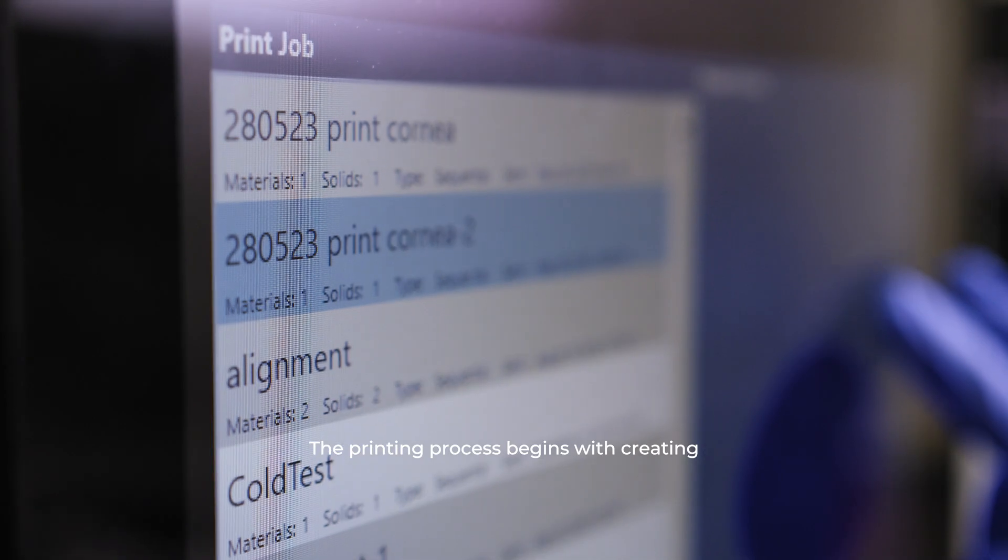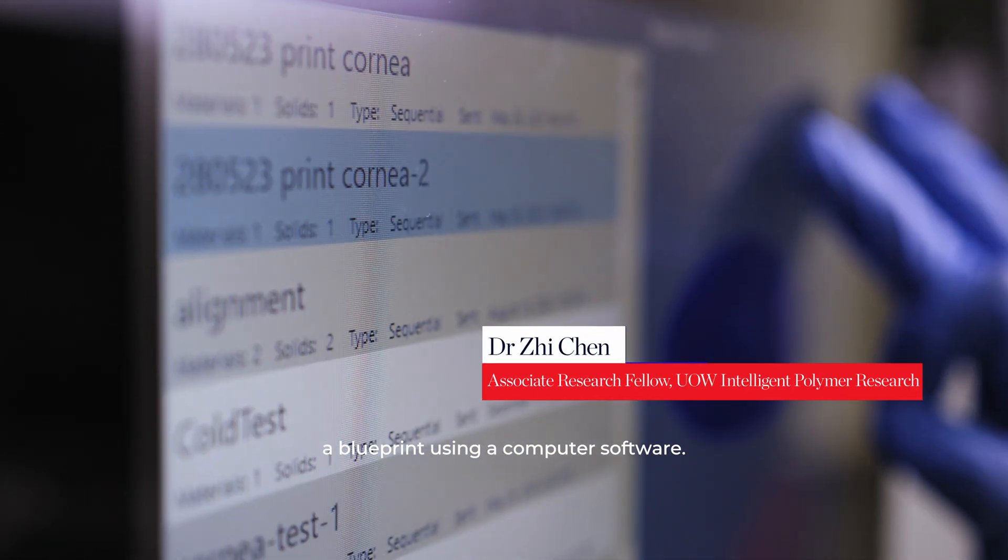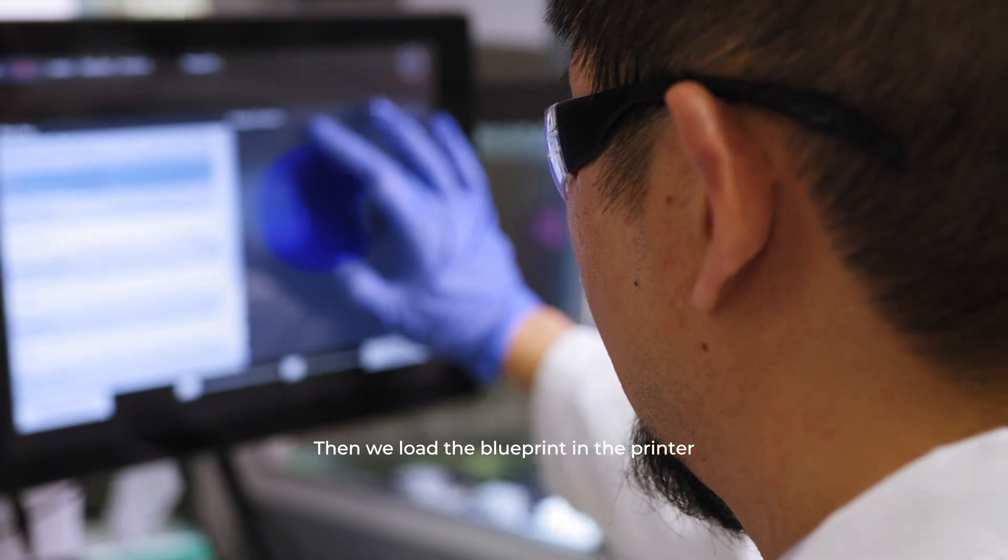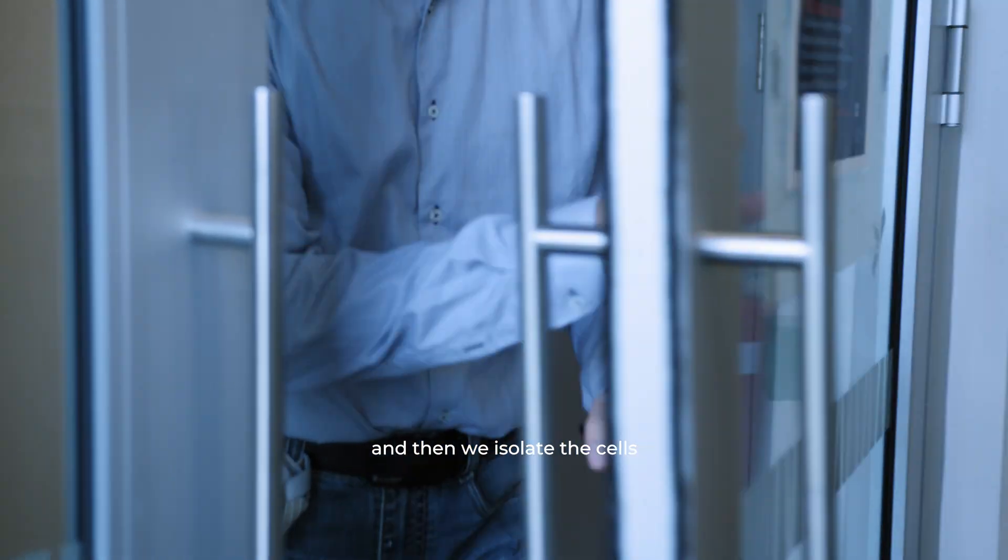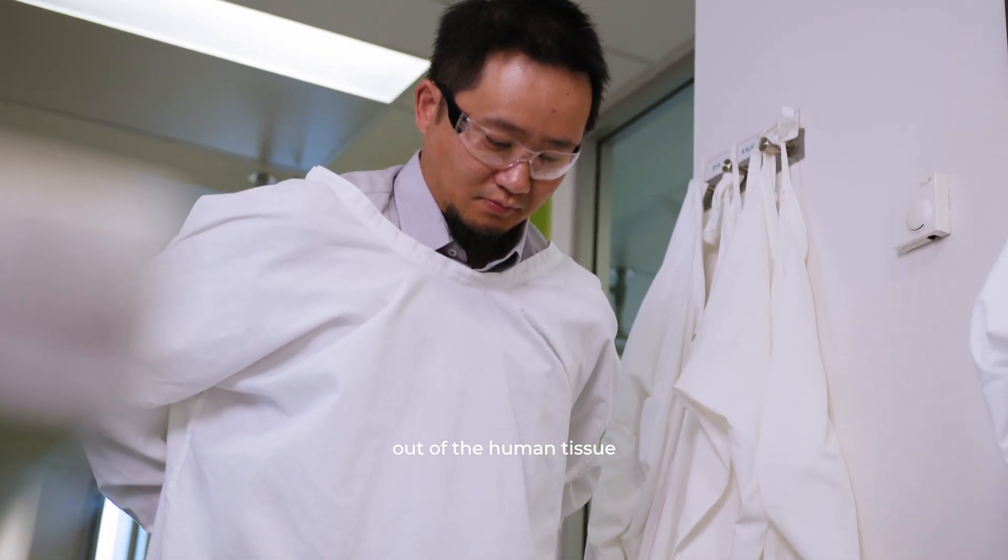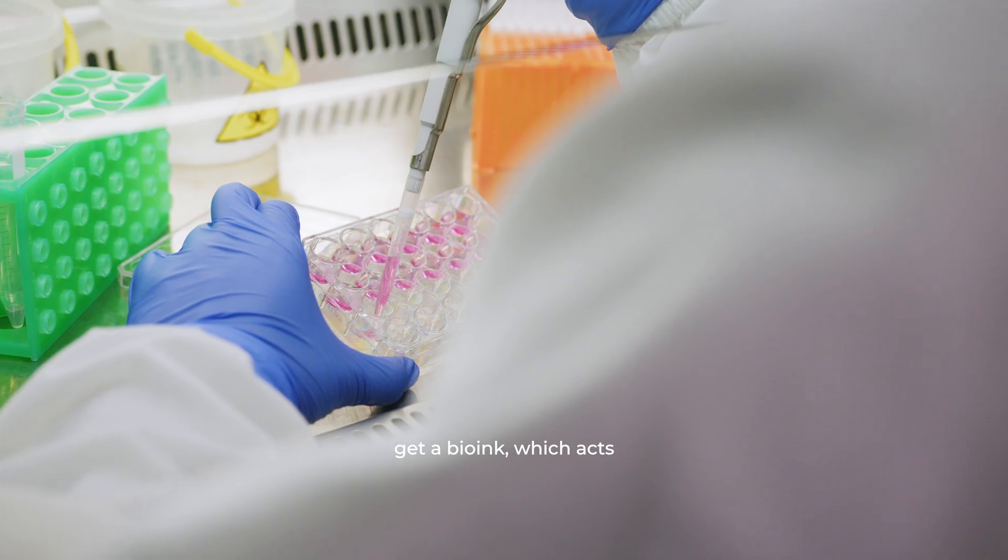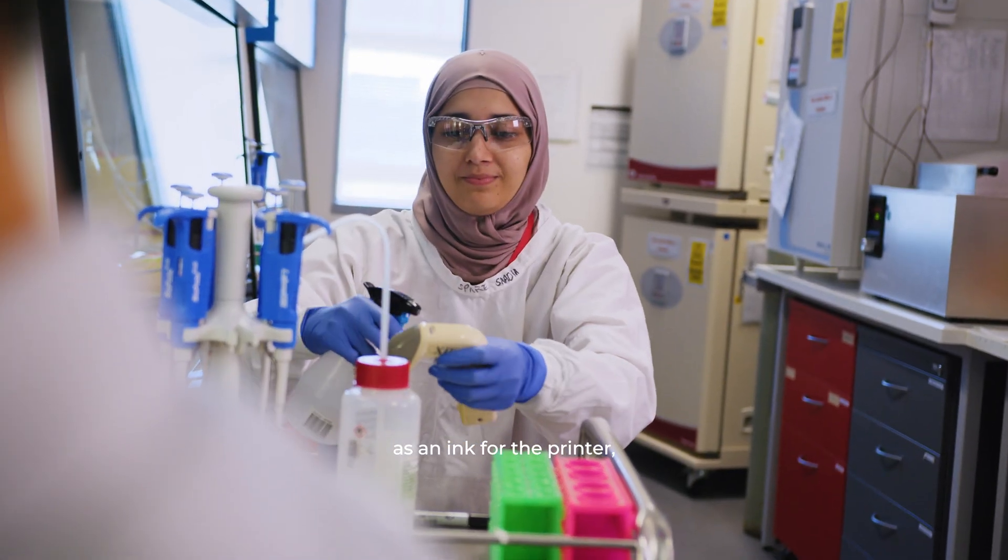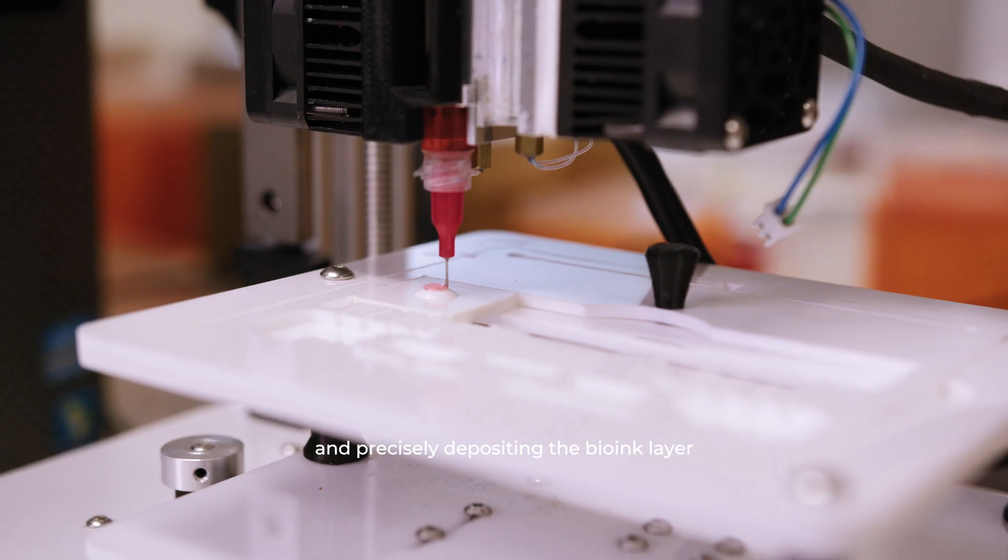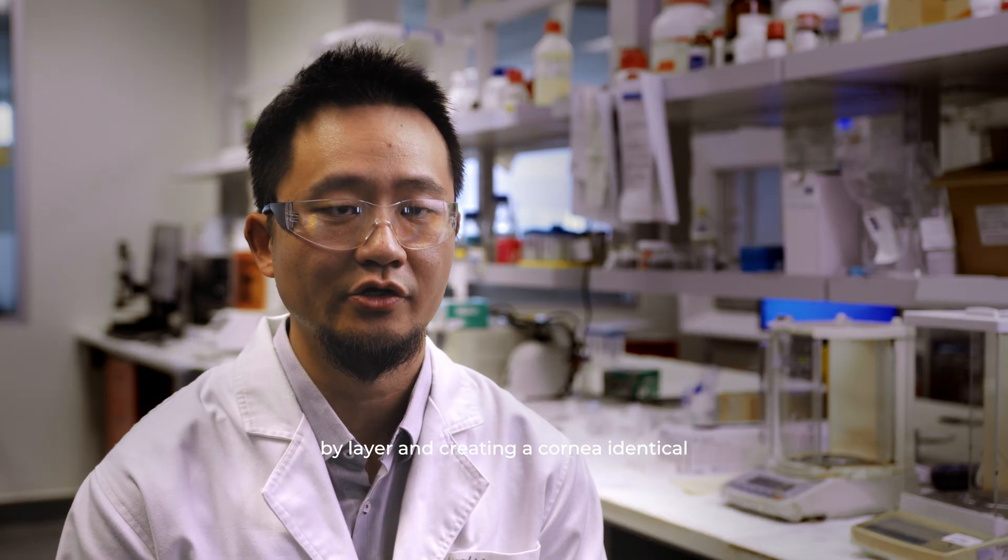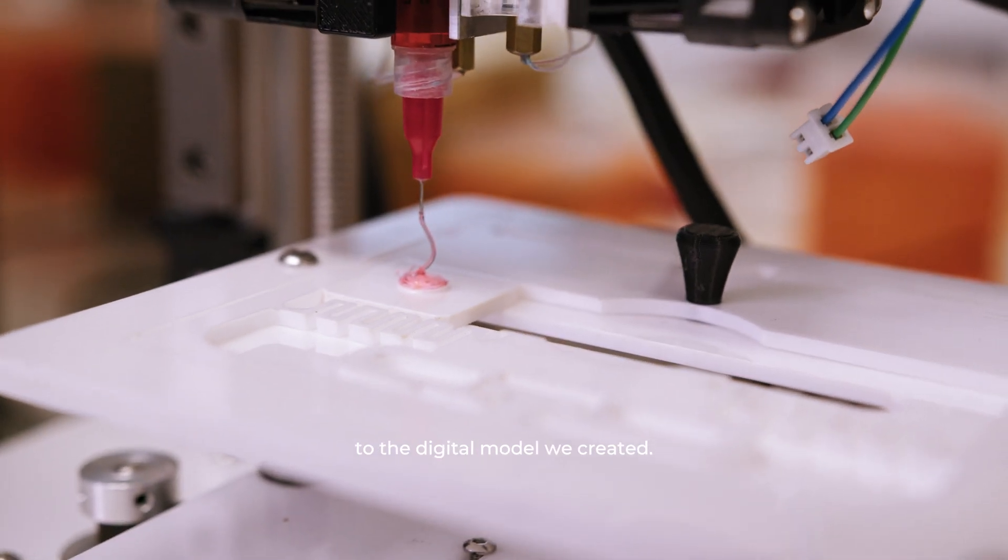The printing process begins with creating a blueprint using a computer software and then we load the blueprint in the printer. Then we isolate the cells out of the human tissue and it combines with our biomaterials to get a bio ink which acts as an ink for the printer, precisely depositing the bio ink layer by layer and creating a cornea identical to the digital model we created.